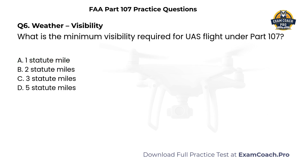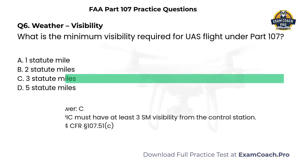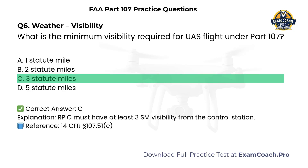Weather. Visibility. What is the minimum visibility required for UAS flight under Part 107? A. One statute mile. B. Two statute miles. C. Three statute miles. D. Five statute miles. Correct answer: C. The remote pilot in command must have at least three statute miles visibility from the control station.